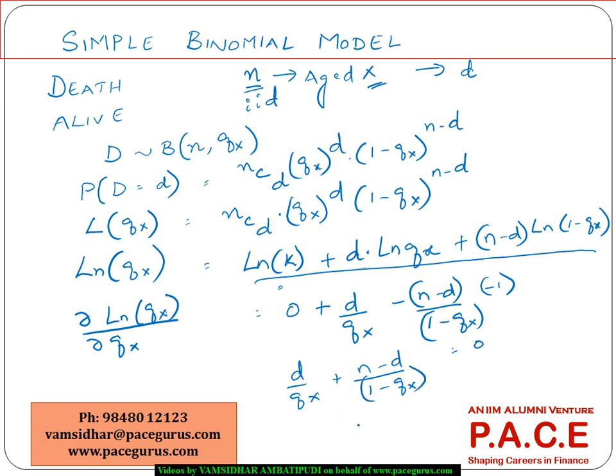So obviously when I am doing a small rework - d minus dqx minus nqx plus dqx, this should be equal to 0. So I am simplifying this off, working out as d minus nqx equal to 0. From here I get my qx equal to d/n.